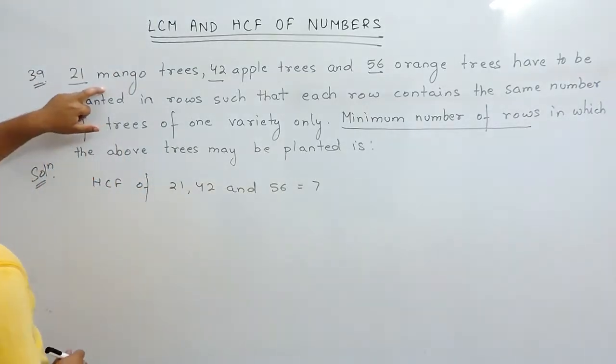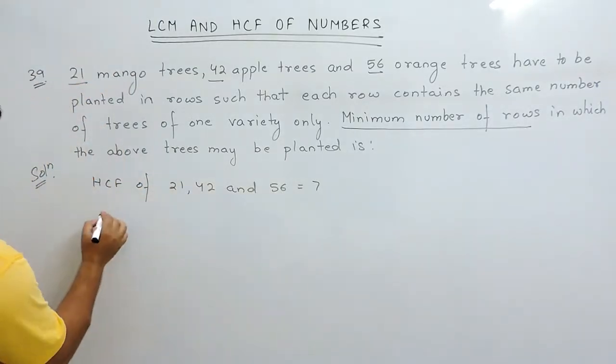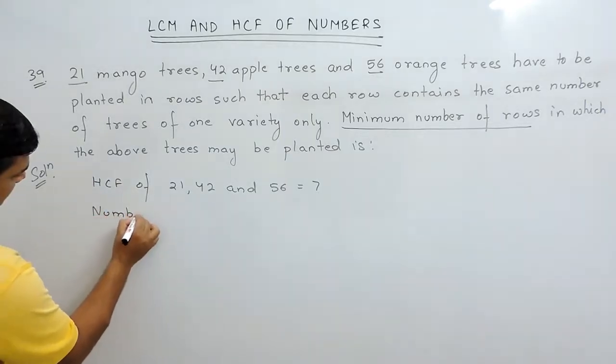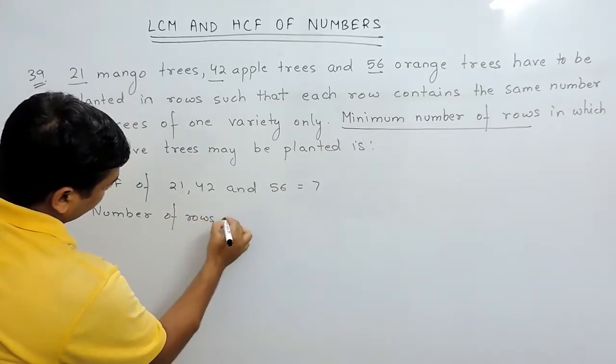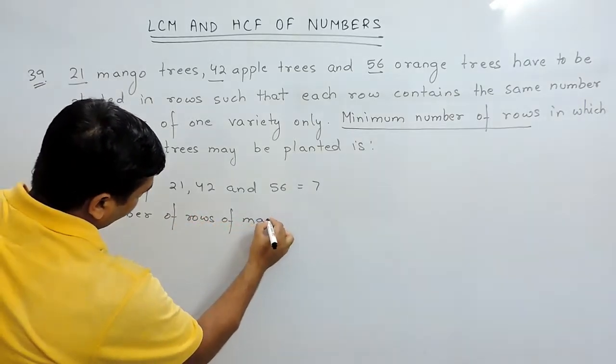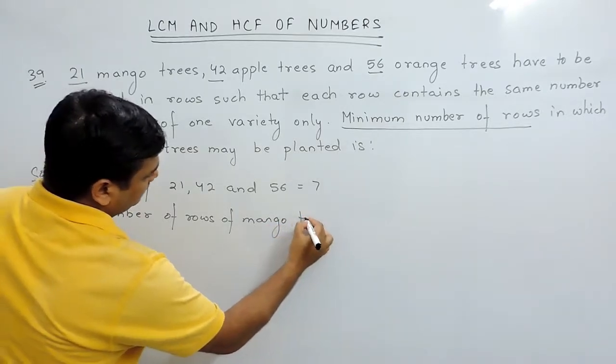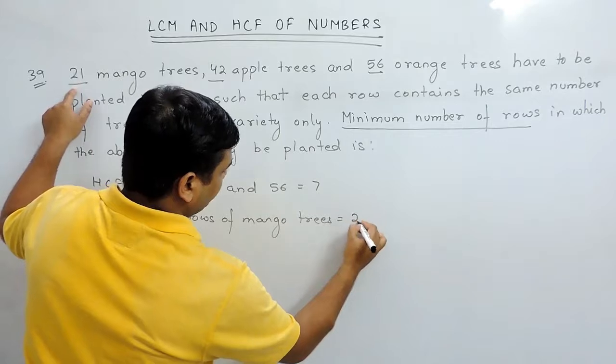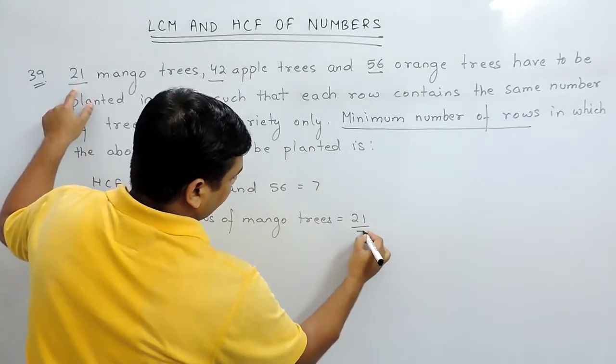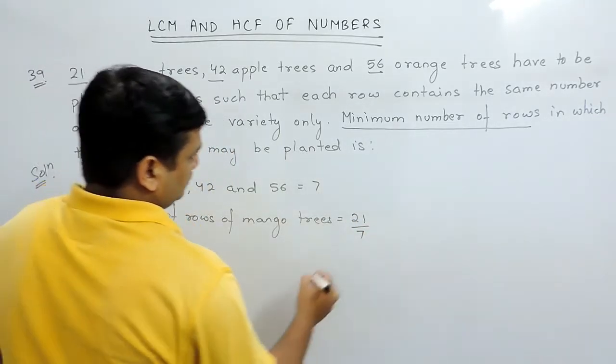Then the number of rows of mango trees will be the number of trees divided by trees planted in each row. Therefore, the number of rows are 3.